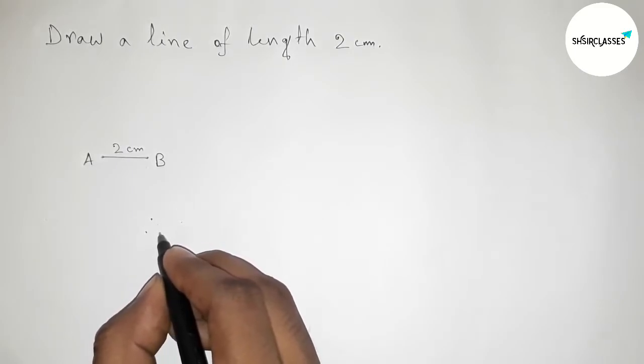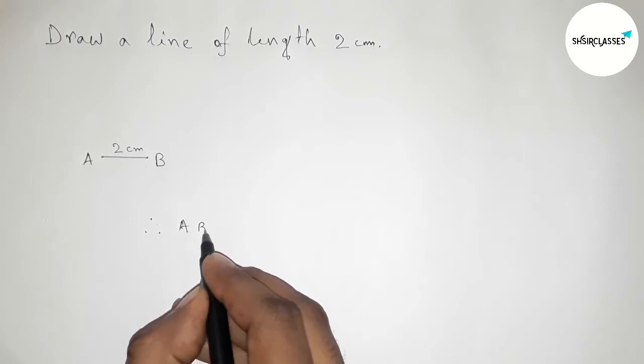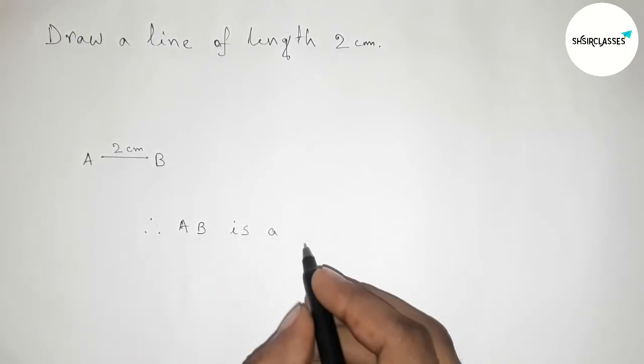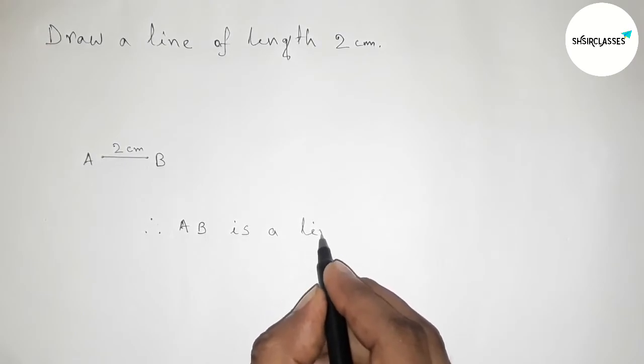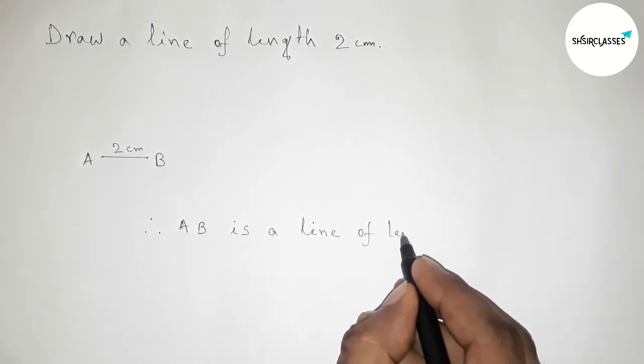AB is a line of length 2 centimeter. So by this way we can draw a line of length 2 centimeter in easy way.